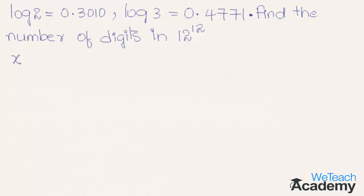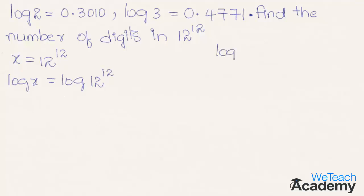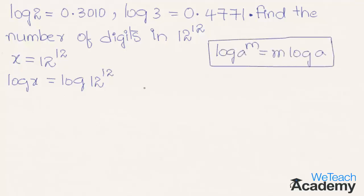Let us assume x equal to 12 raised to the power 12 and applying log on both sides. We get log x is equal to log 12 raised to the power 12, which is in the form of log a raised to the power m equals m log a. Using the exponent of power we can write this as 12 log 12.